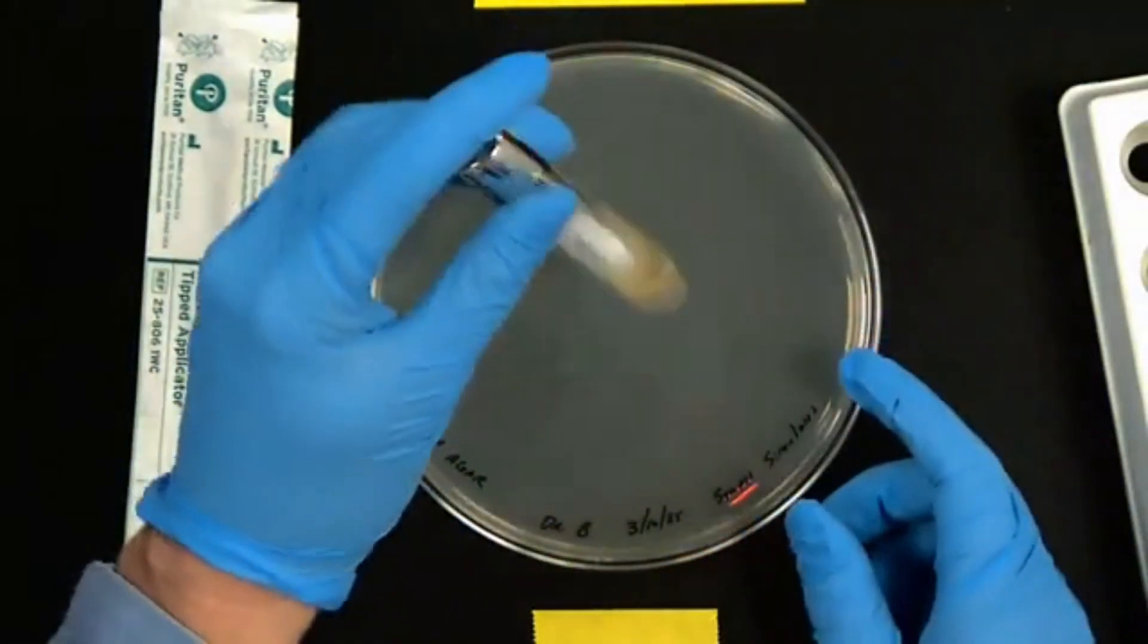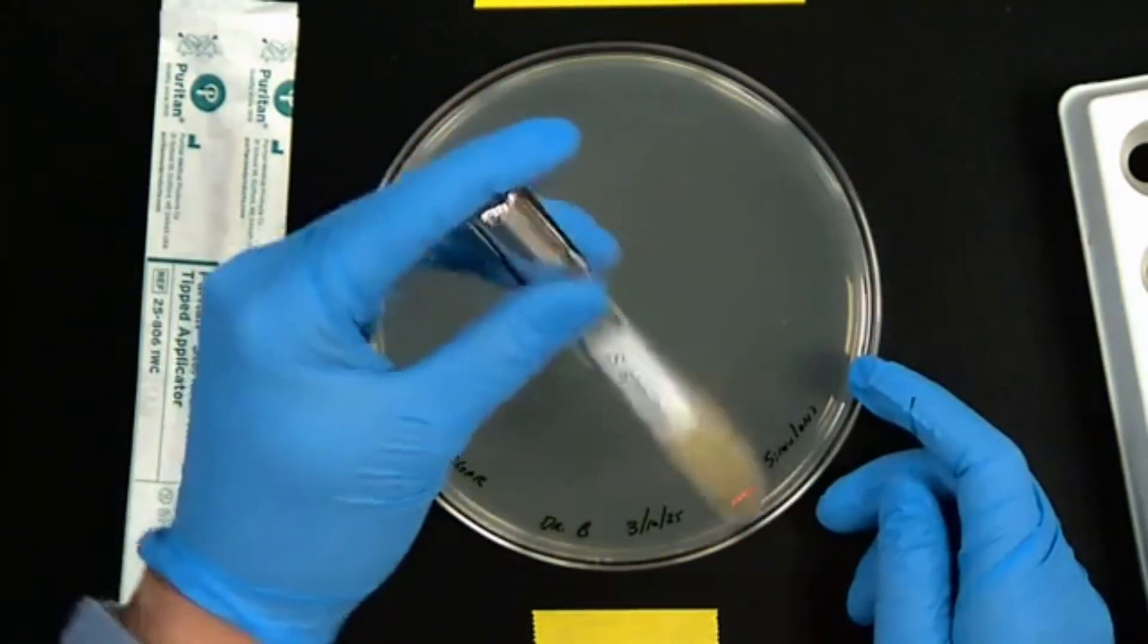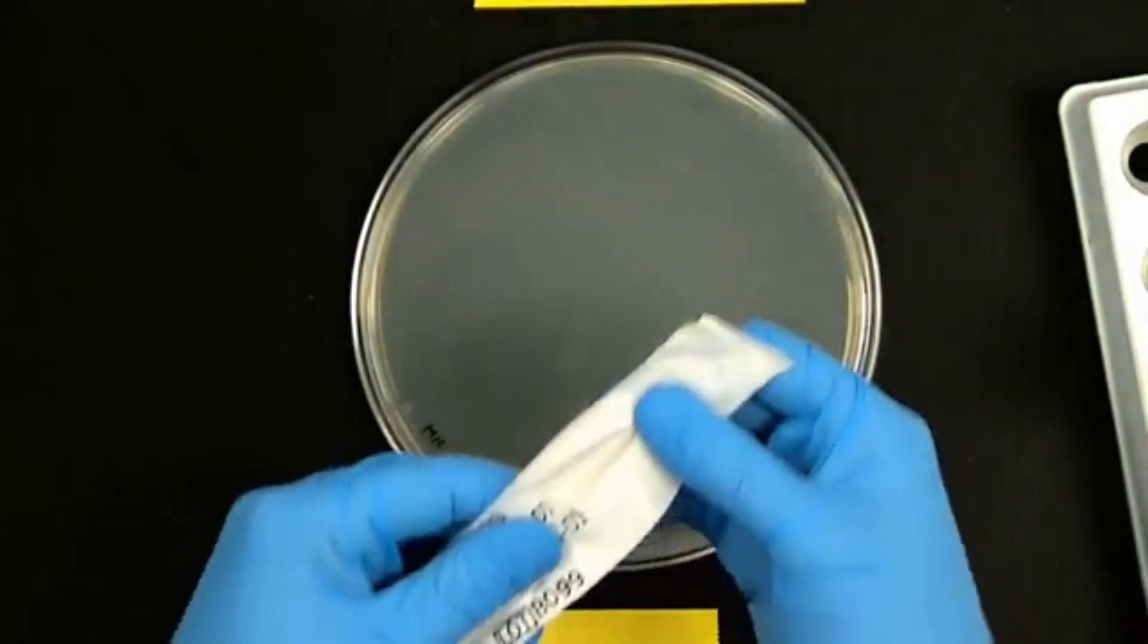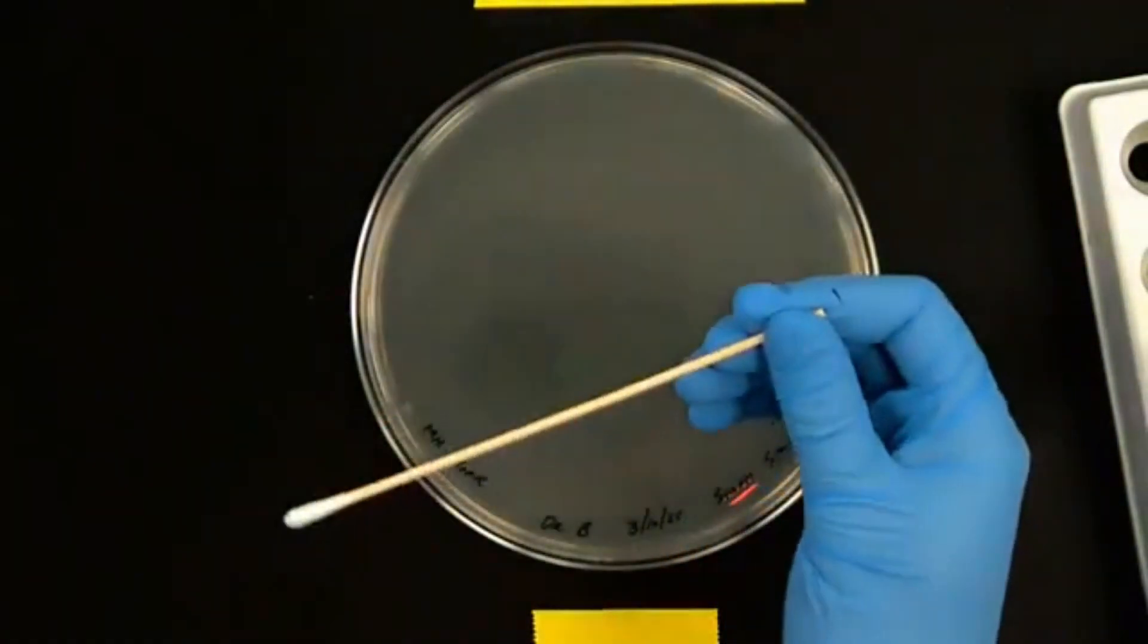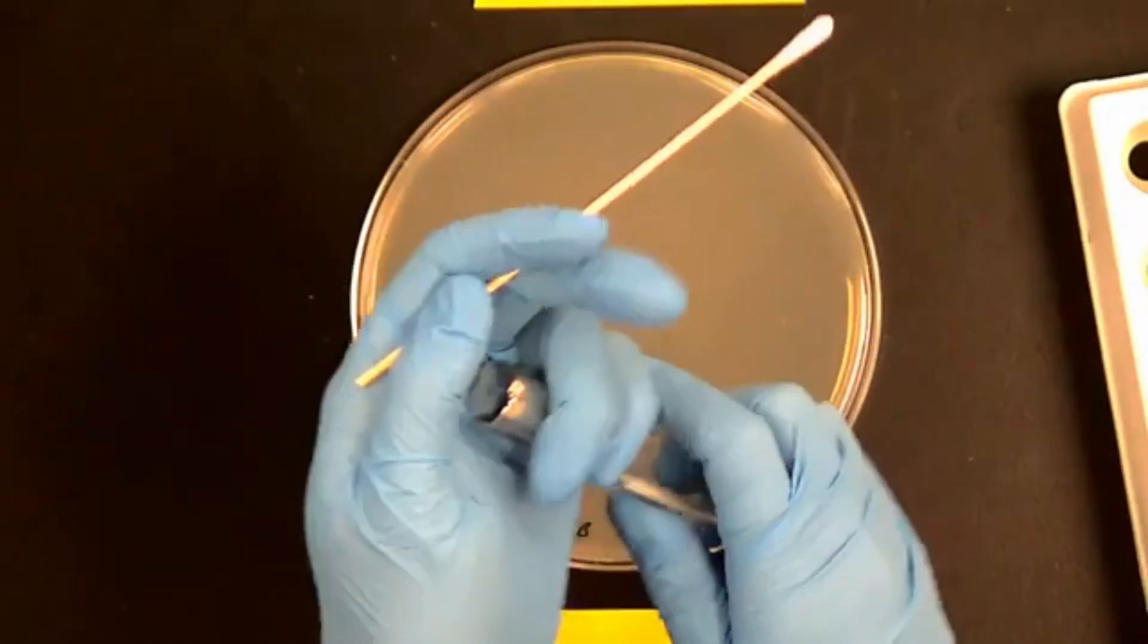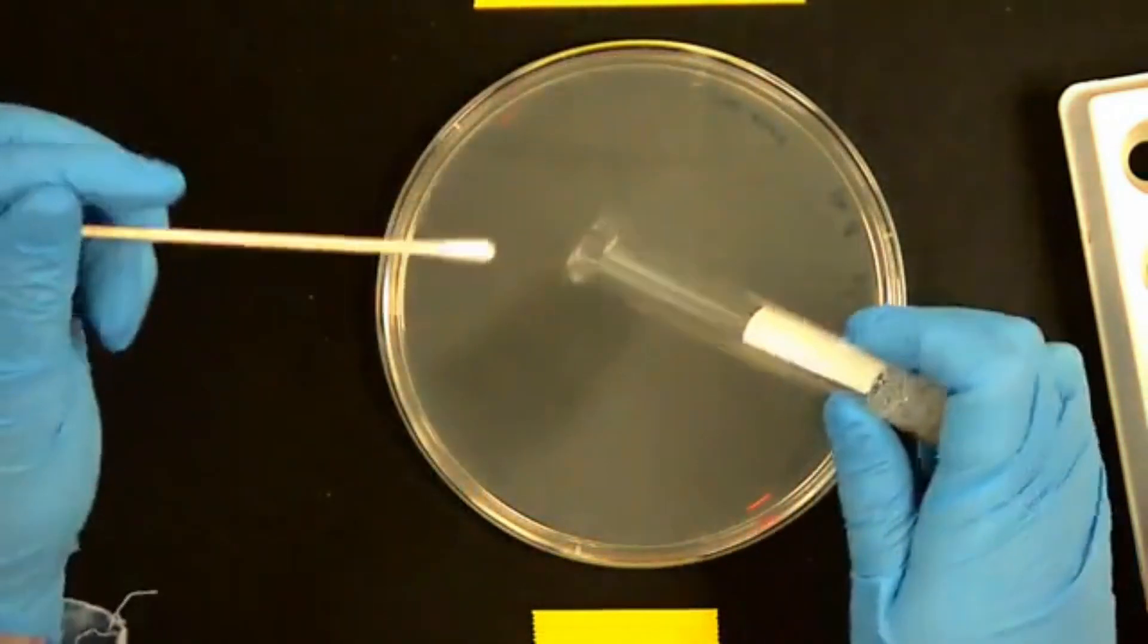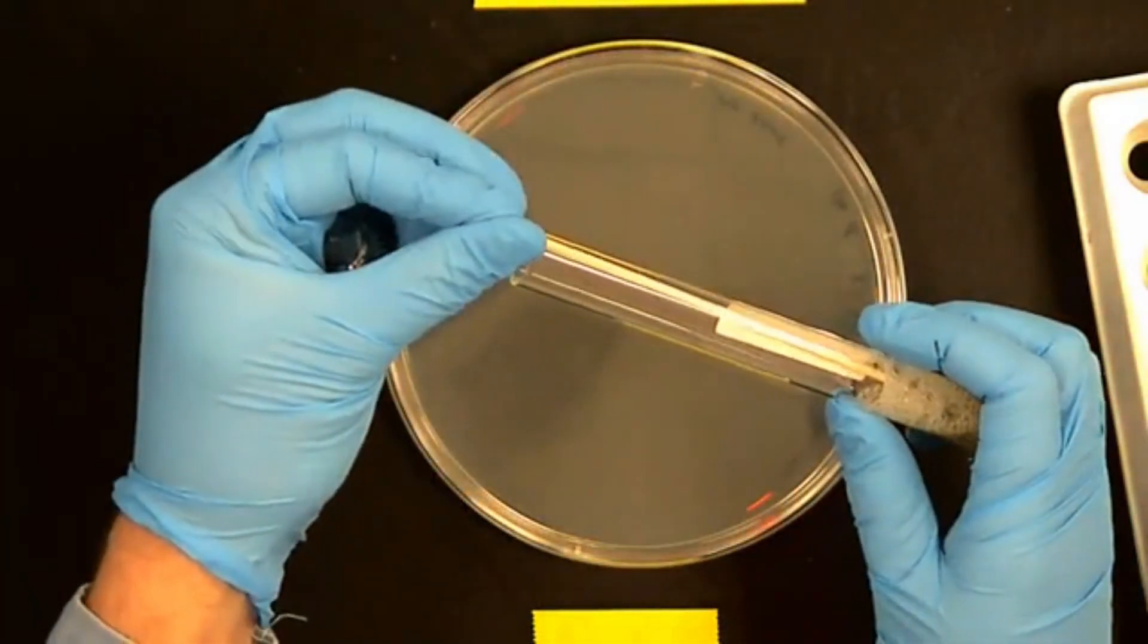Because we're sampling from a broth, it's important to mix this carefully before getting a sample of bacteria. Then using a sterile swab, you're going to obtain some of the bacteria that you have selected to put on your plate. To do so, you're going to submerge the sterile swab into that liquid broth.